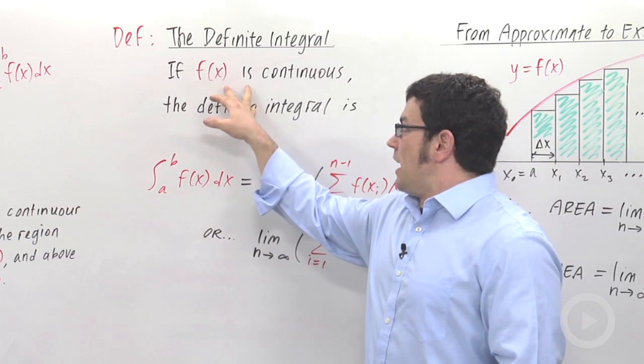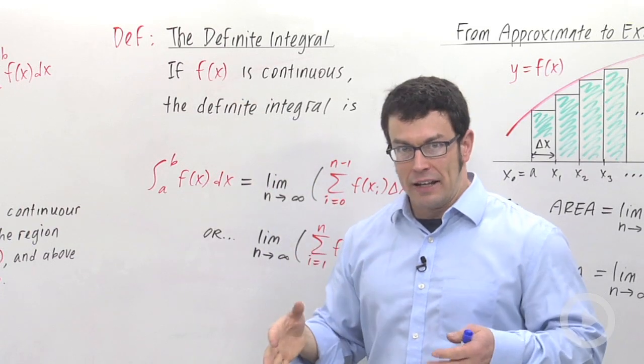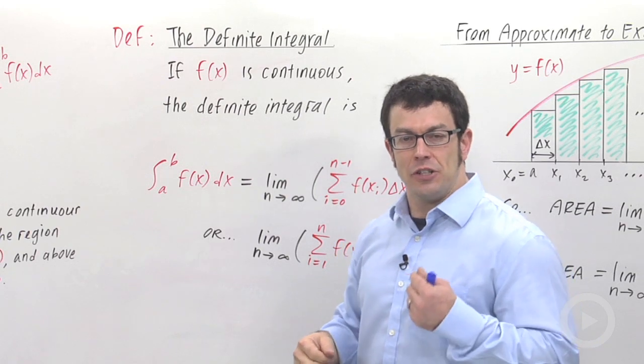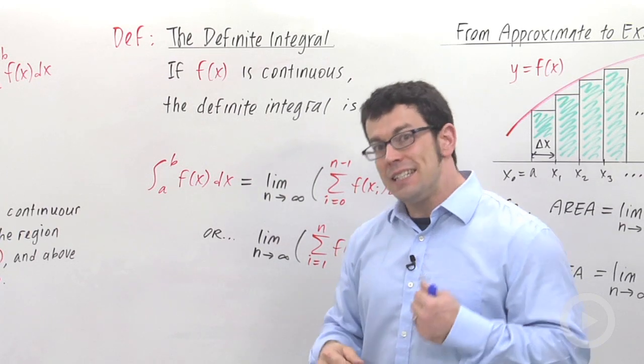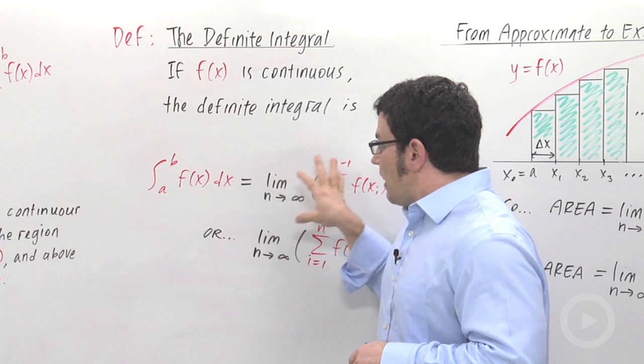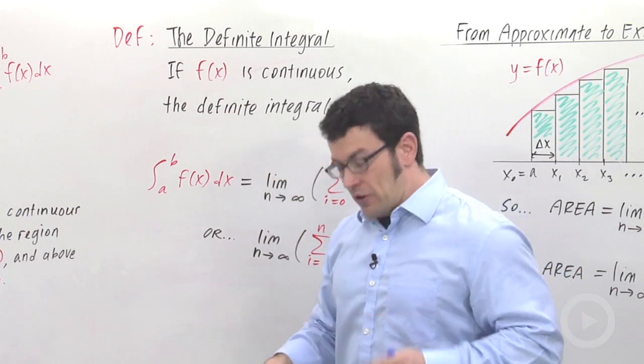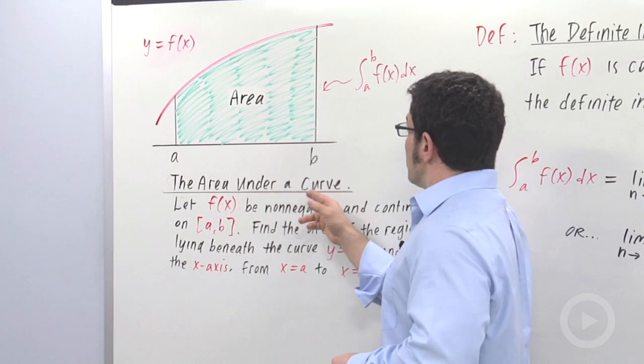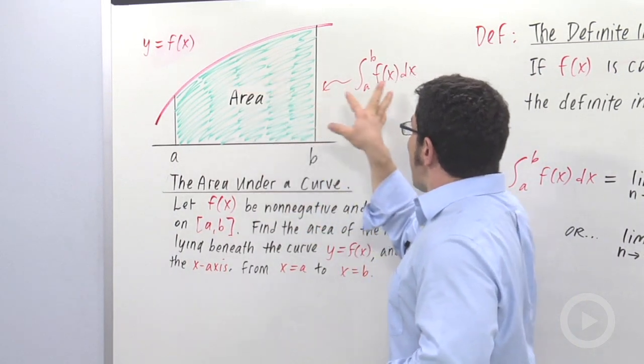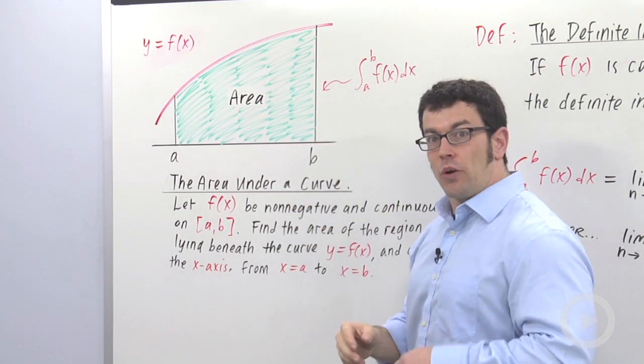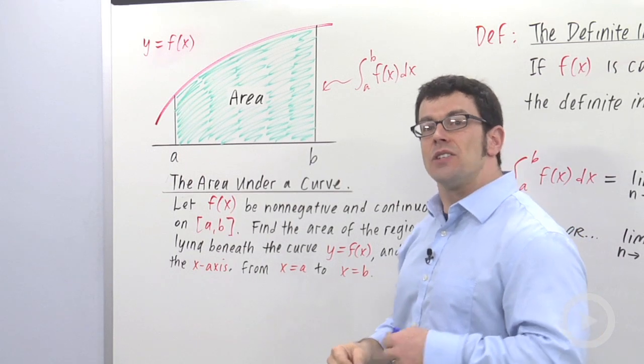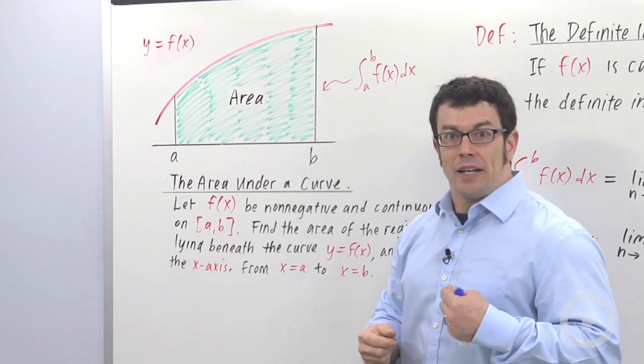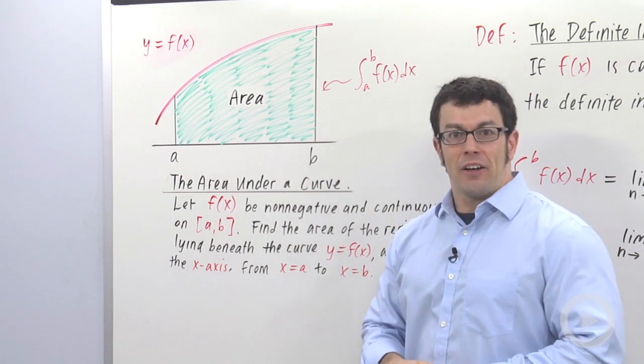Now, note here I didn't specify whether or not f(x) was non-negative. It just has to be continuous for this definition to work. But if f(x) is non-negative, then this value will exactly equal the area under the curve. So let's go back to our original picture here. Remember this problem, the area under the curve. This area is exactly given by the definite integral if f(x) is non-negative, and that's why it's so important. We don't have to approximate anymore. We can get the exact value.